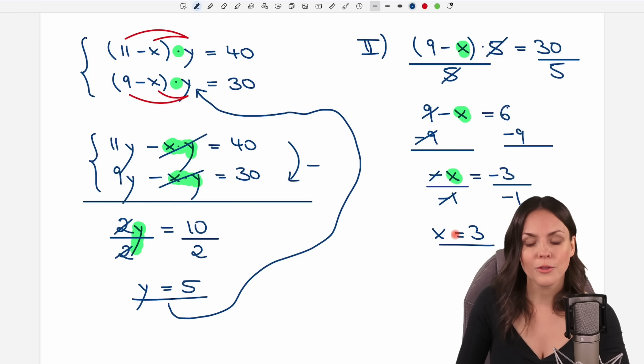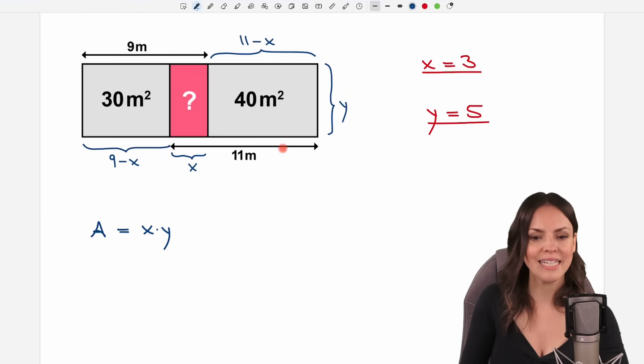We found our values for x and y so let's take them. Let's go back to the beginning here. What did we want to do with them? We needed them for our area of our rectangle. So x equals 3, y equals 5, 3 times 5 equals 15. So we found the area of our red rectangle. We were working with meters and square meters so the area is 15 square meters.